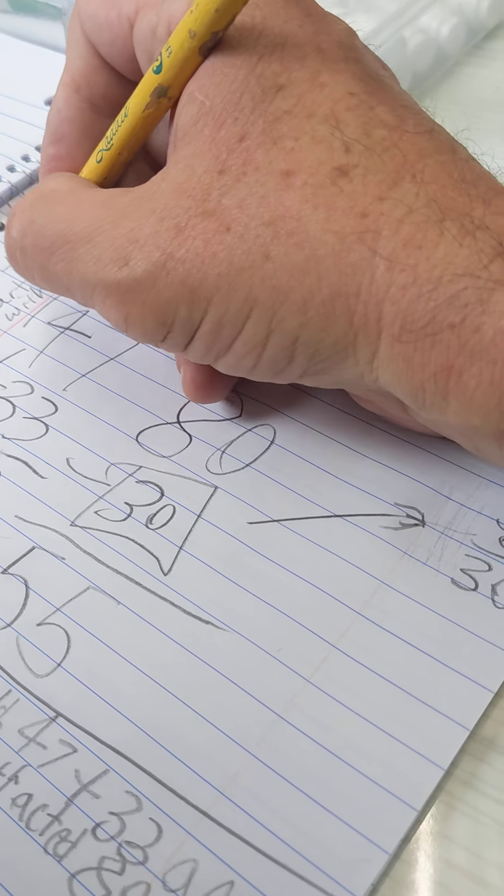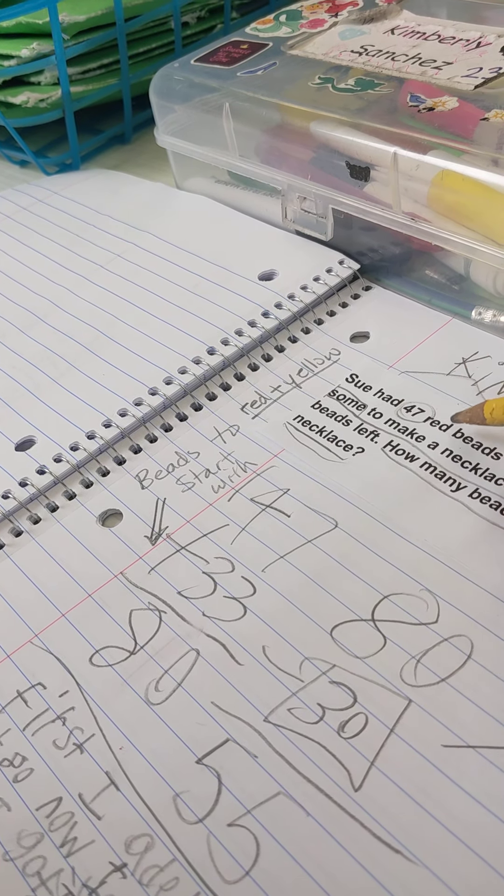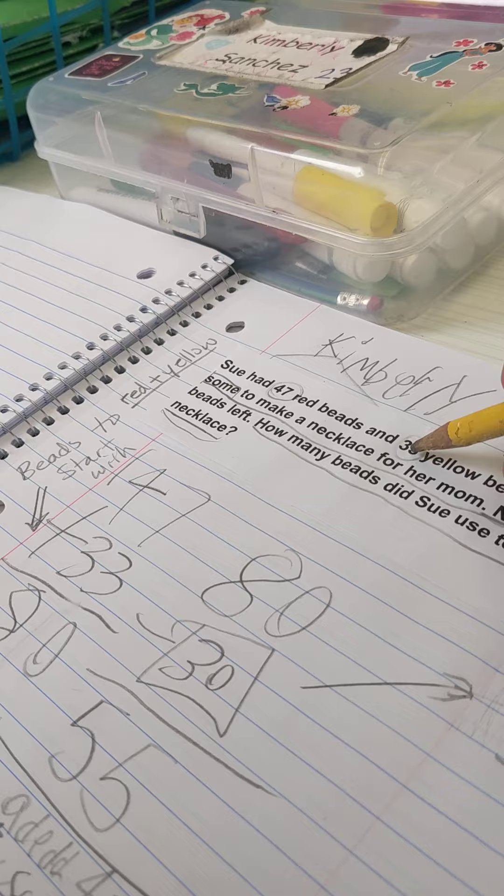So I had to find the total beads to start with, and that's the red plus the yellow. That's why I chose 47 and 33.